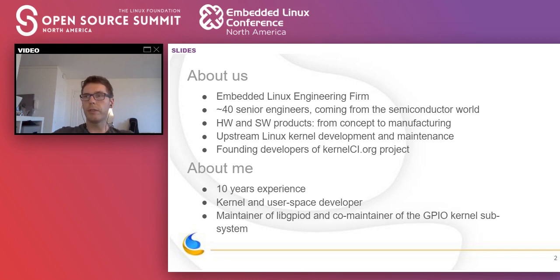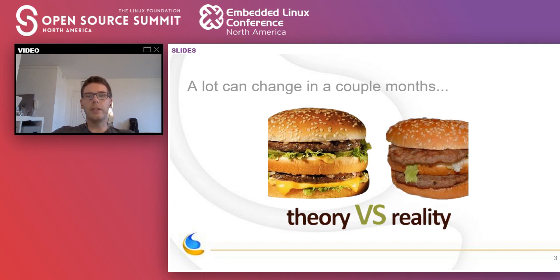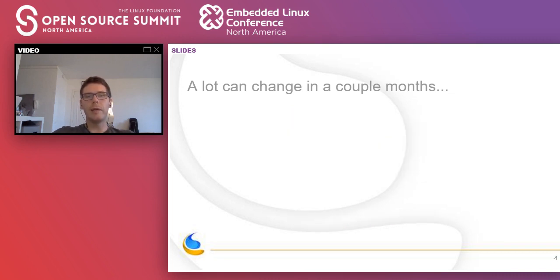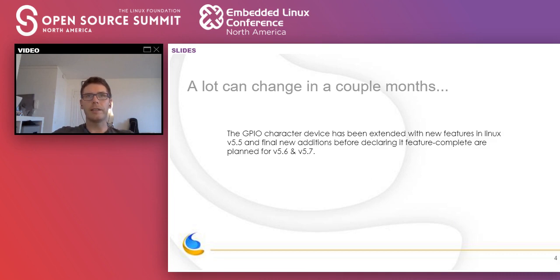I also contribute to many other projects like U-Boot, Yocto, and so on. This presentation will actually be much different than what I imagined when writing the abstract a couple months ago — and not only because I thought I'd be physically present in Austin, but also the subject matter changed significantly. In one line of the abstract, I said something like: the GPIO character device has been extended with new features in Linux 5.5, and final new additions before declaring it feature complete are planned for 5.6 and 5.7.